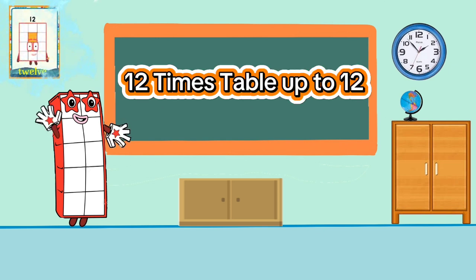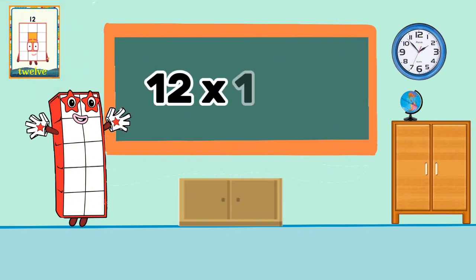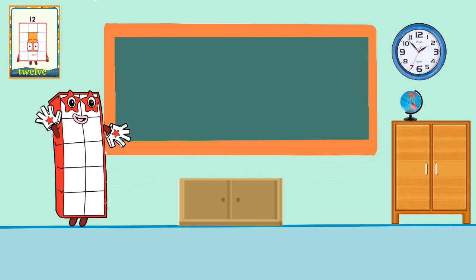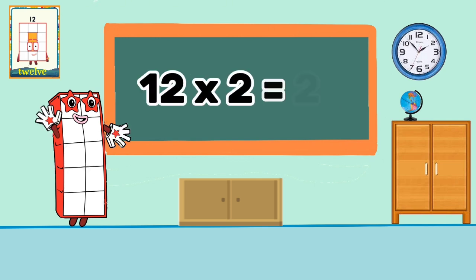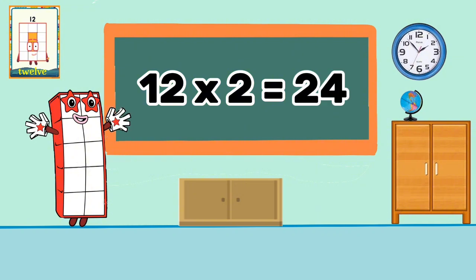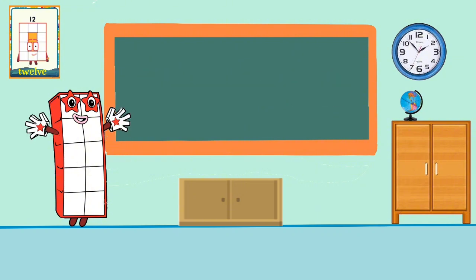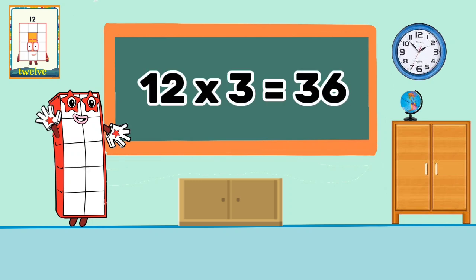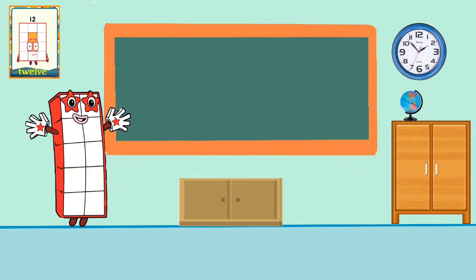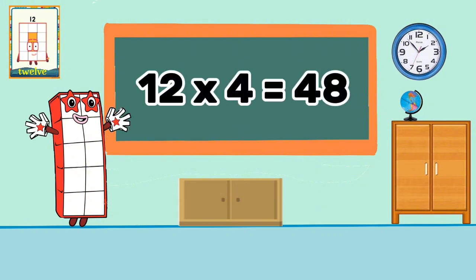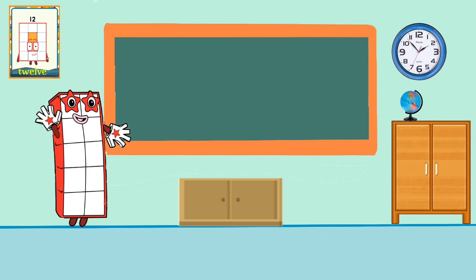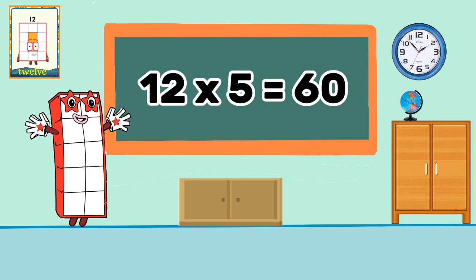12 times table up to 12. 12 times 1 equals 12. 12 times 2 equals 24. 12 times 3 equals 36. 12 times 4 equals 48. 12 times 5 equals 60.